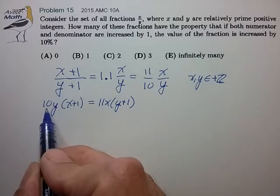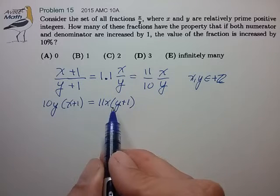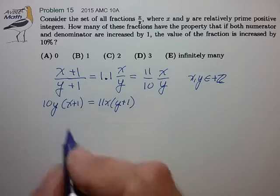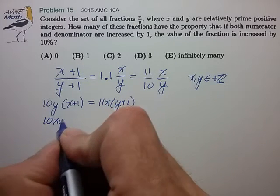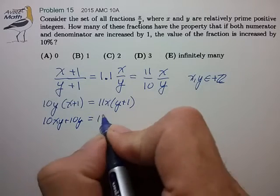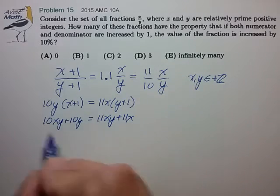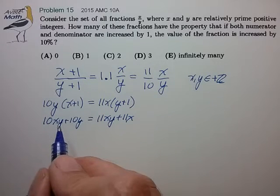It looks like we have three factors on the left, three factors on the right. This would be difficult to apply the fundamental theorem of arithmetic. So let's try to reduce this further. Let's multiply this out. 10xy plus 10y. Let's bring everything to the left side and multiply it by negative 1.